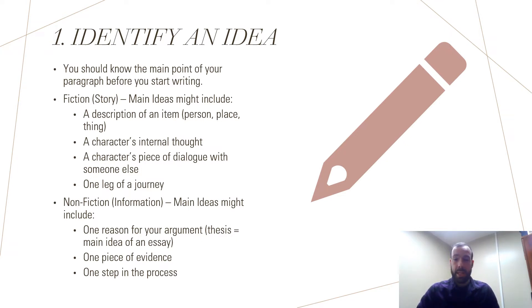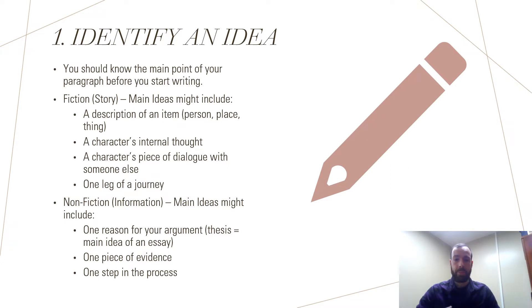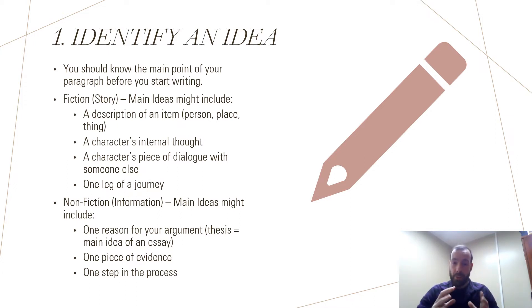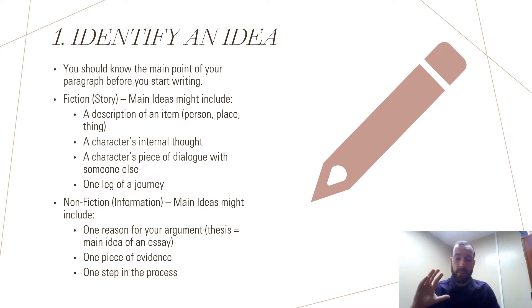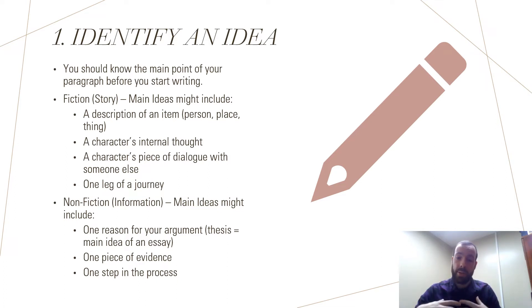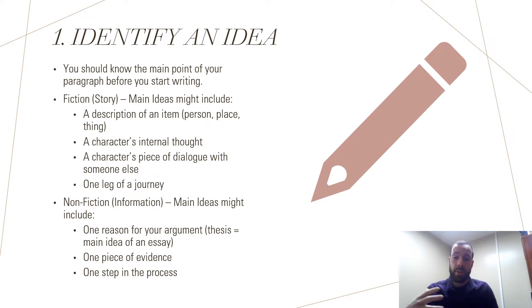Step one is to identify an idea. You should know the main point of your paragraph before you start writing — know the purpose of your writing. If you're writing fiction, like a story, your main ideas might be a description of an item, a person, place, or thing. Maybe you're focusing on a character's internal thought, a piece of dialogue, or one leg of a journey. These are all different ideas for what might be the main idea of your paragraph in fiction.